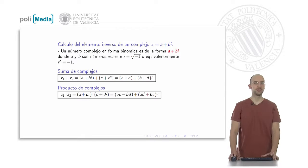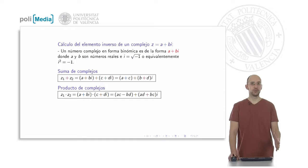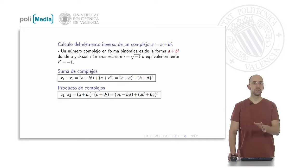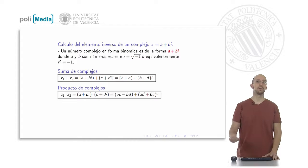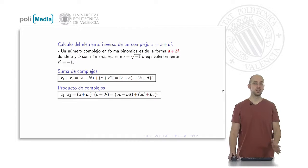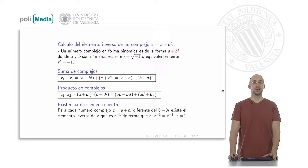The product of complex numbers is a little more complicated. It can be done by applying the formula shown on the screen, or by multiplying using the distributive property of the product with respect to the sum, then joining imaginary parts with imaginary parts and real parts with real parts, taking into account that i squared equals minus 1. Both ways are equally valid.